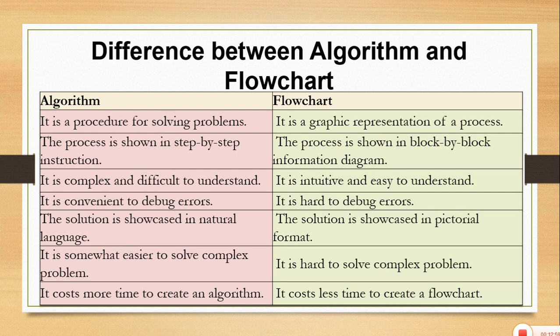An algorithm takes more time but is easy to understand, while the flowchart represents the solution in pictorial format. An algorithm is easier to solve complex problems while a flowchart is hard to solve complex problems. An algorithm costs more time to create — it is a time-consuming process — while a flowchart takes less time.